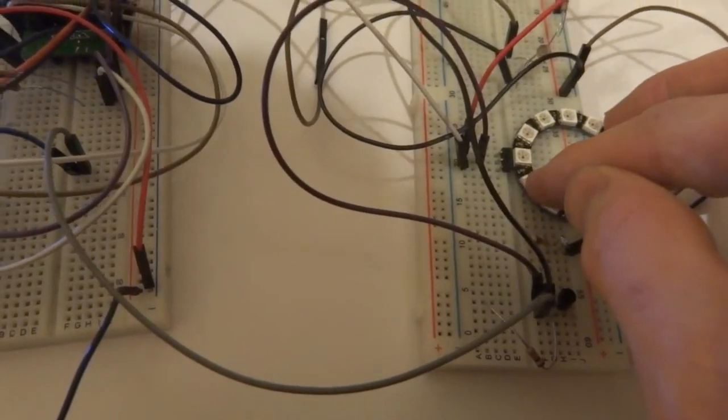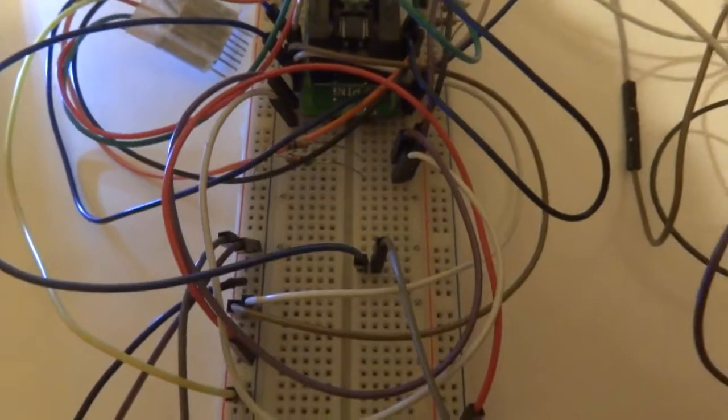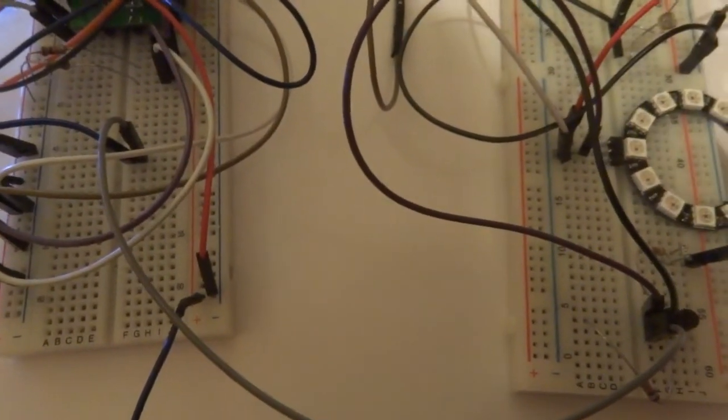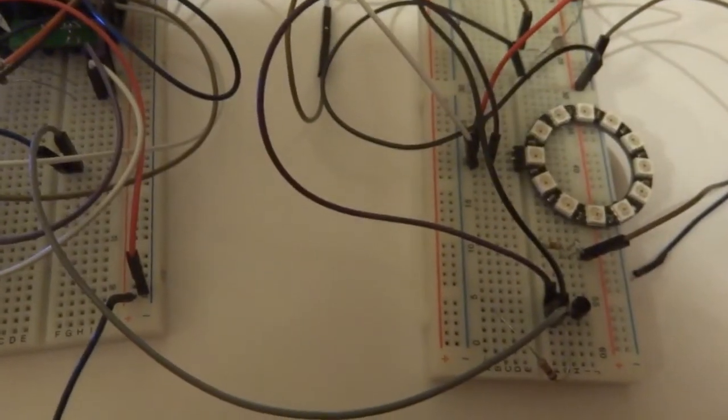And this is controlled by a data pin on the ATtiny 167. So the data pin, I'm just saying digital write, the pin number, and then high or low to the transistor.